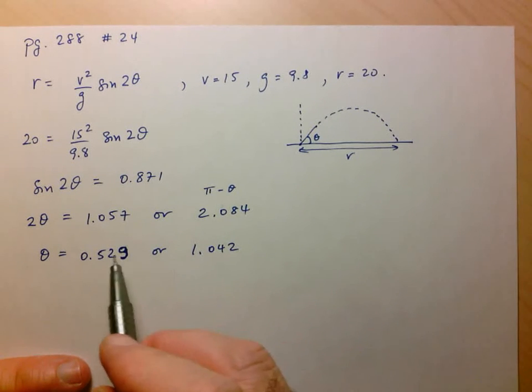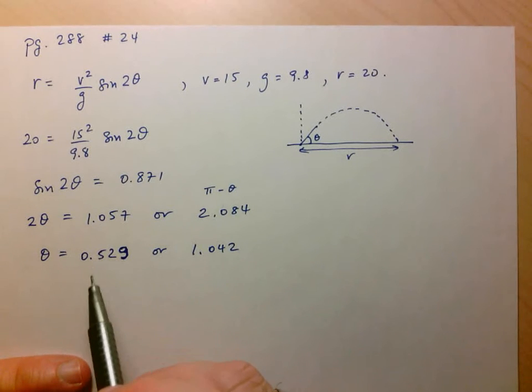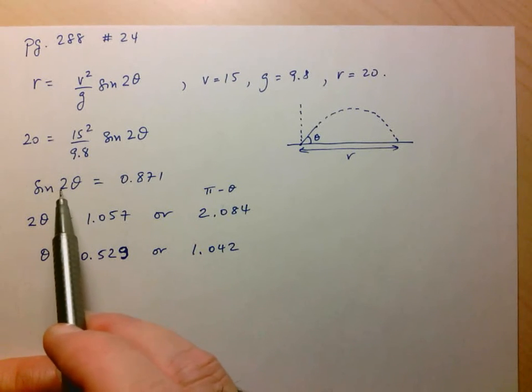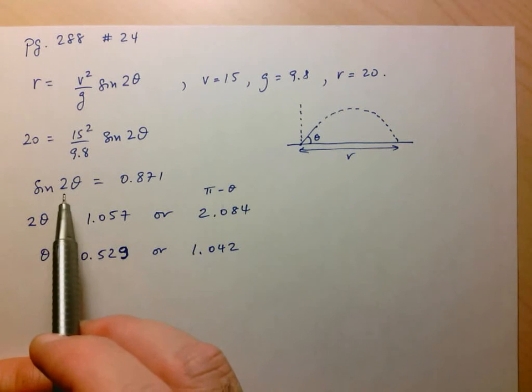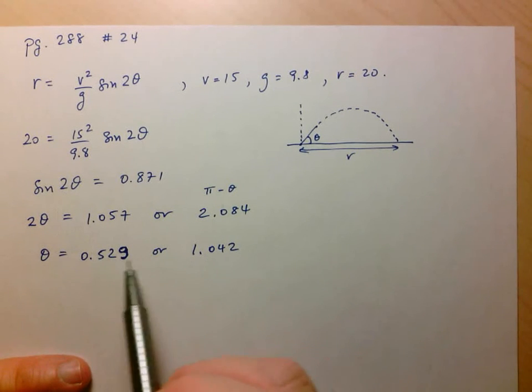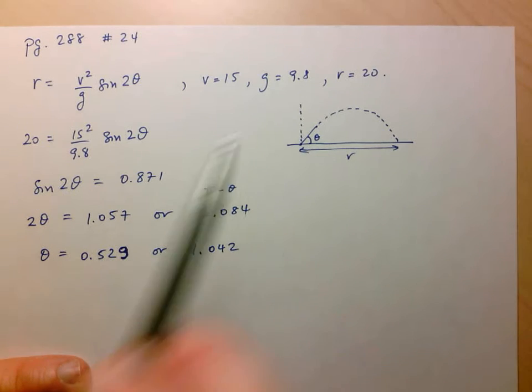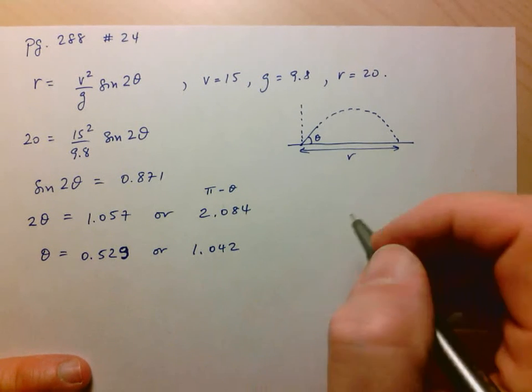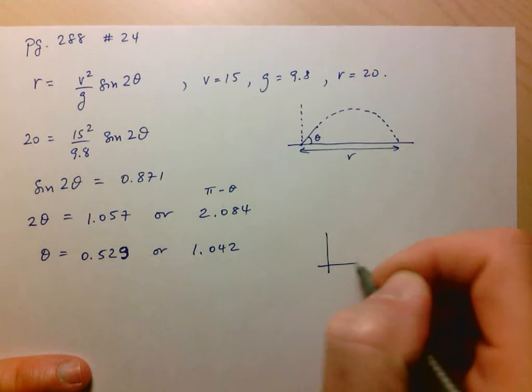Both of these land within that range. But if I try to add the period of my trig ratio - which in this case, since I have 2 theta, is 2 pi over 2 or pi - if I add 3.14 to either of these, I'll be beyond the range. So it looks like we've got two answers, meaning you can reach that goal by either having a smaller angle.